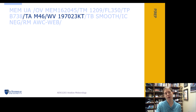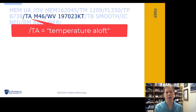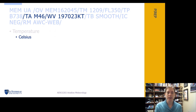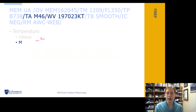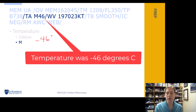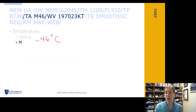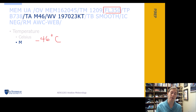The next part of our PIREP tells us our temperature — TA, which I remember as temperature aloft. It's given in degrees Celsius like a METAR, using the M convention for negative values. This example tells us it's negative 46 degrees Celsius. That's pretty cold, but looking at the altitude — they're at flight level 350, which is 35,000 feet — it makes sense.